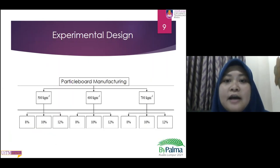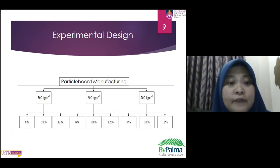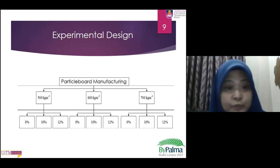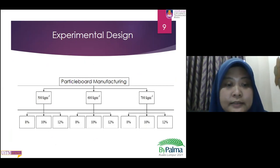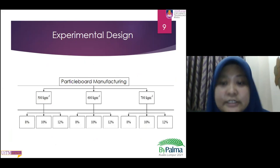So these are the experimental design. We have three different densities: 500, 600, and 700 kg/m³, and also different percentages of resin content.